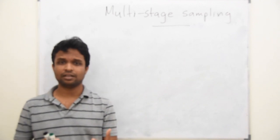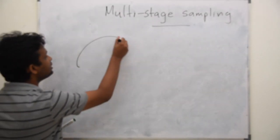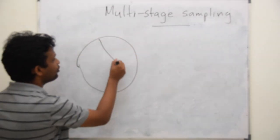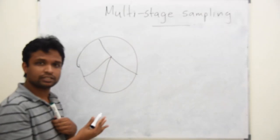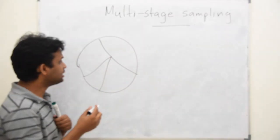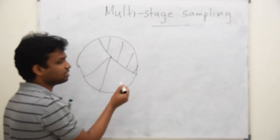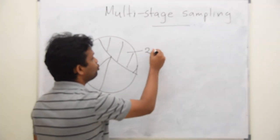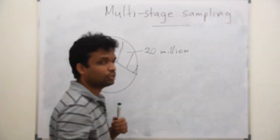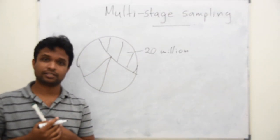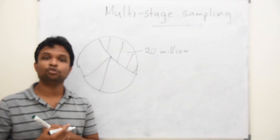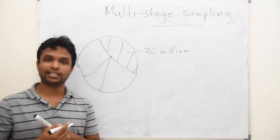Even though it is cluster sampling, assume that this is the total population where we have four clusters but still assume that this single cluster may contain 20 million people or 20 million animals. It will be difficult to do the research even using cluster sampling.